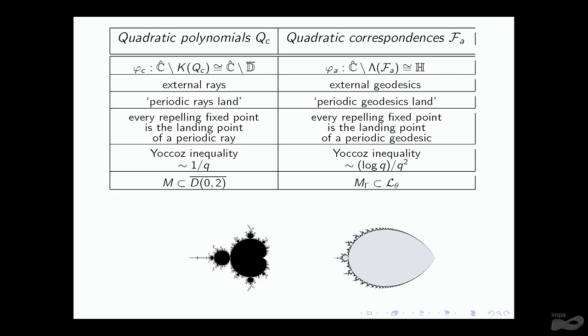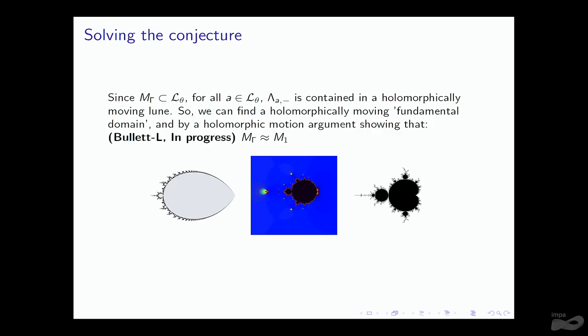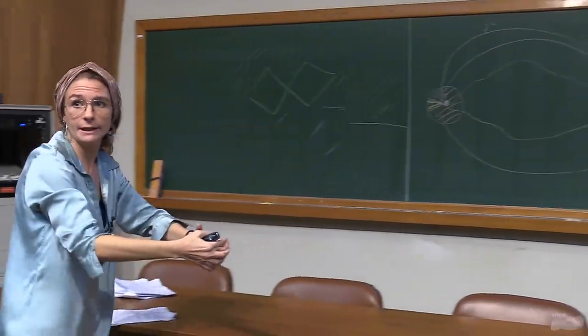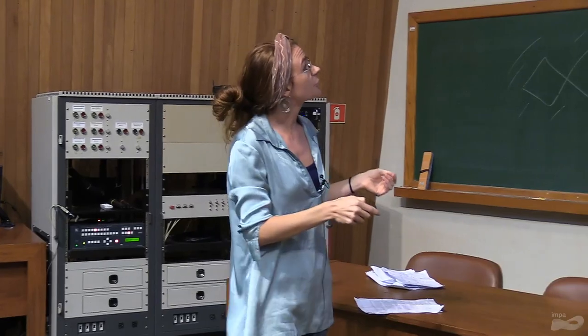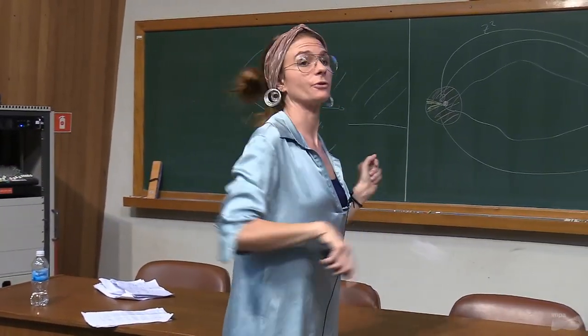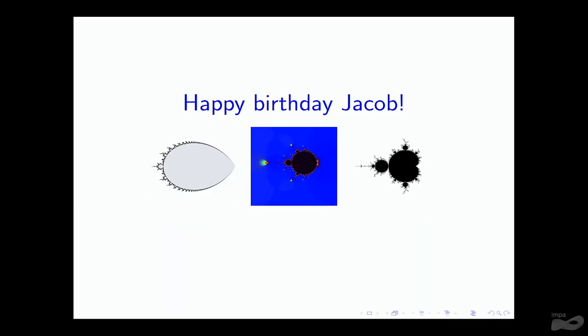Just as the Mandelbrot set is contained in a disk of center 0 and radius 2, our connectedness locus is contained in a lune. This is still a work in progress. But now that we know the connectedness locus is contained in a lune, we can find a holomorphically moving fundamental domain for our correspondence, perform the surgery holomorphically, and the holomorphic motion machinery shows that the two connectedness loci are homeomorphic. And this is what I wanted to say, mathematically speaking.